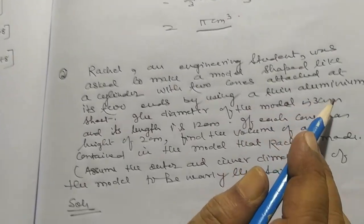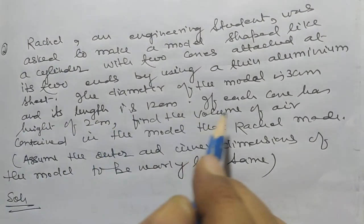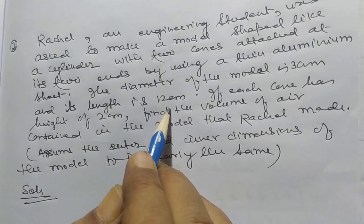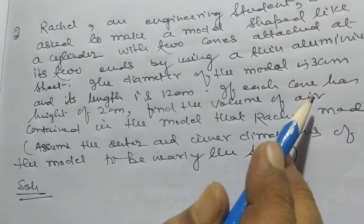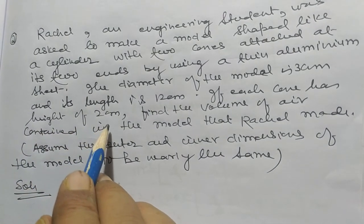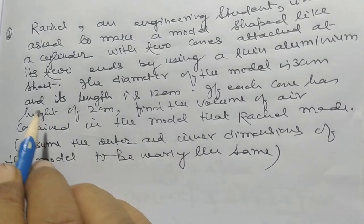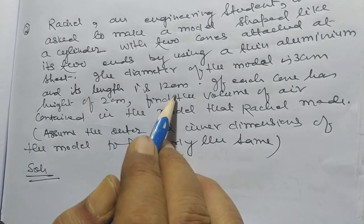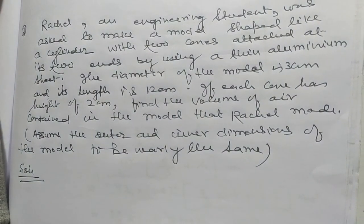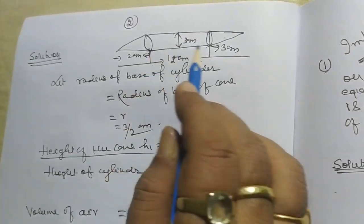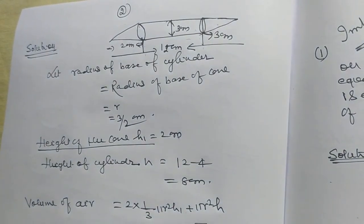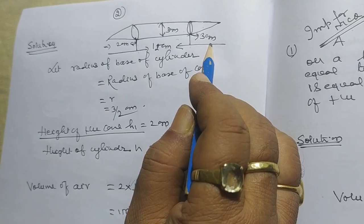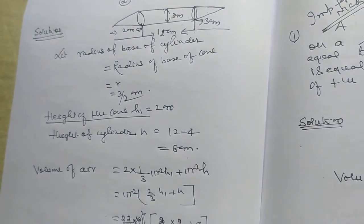By using a thin aluminum sheet, the diameter of the model is three centimeters and its total length is twelve centimeters. If each cone has a height of two centimeters, the length of the cylinder is twelve minus four, that is eight centimeters.